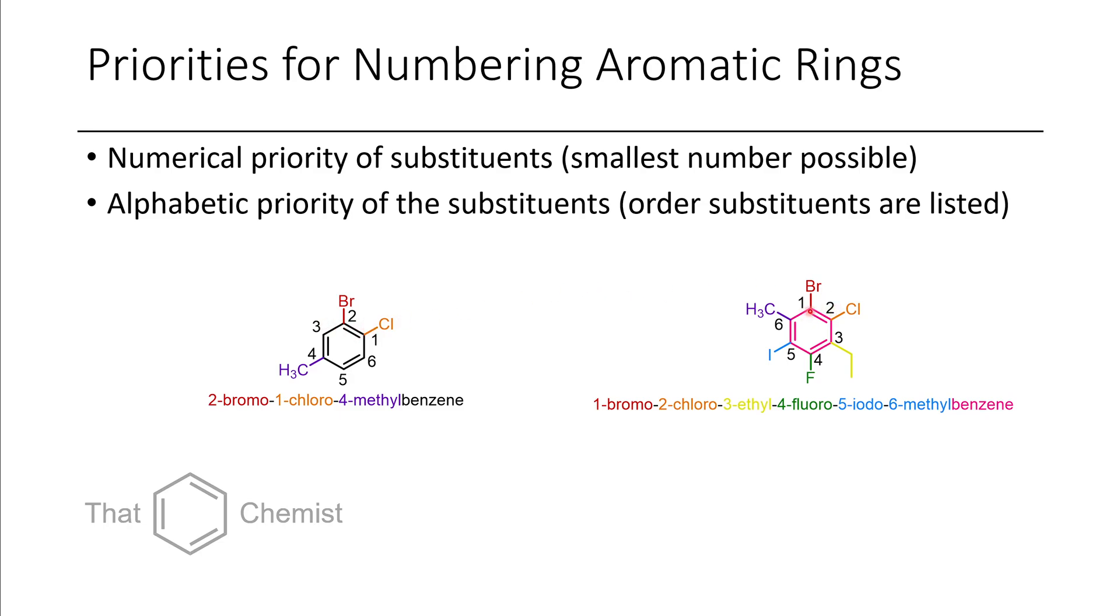Now, in this case, if it's possible to do it alphabetically, then the preference would go to the earliest letter in the alphabet. So in this case, bromo. So you have 1 bromo, 2 chloro, 3 ethyl, 4 fluoro, 5 iodo, 6 methyl benzene.